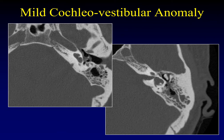Here is a mild cochlear vestibular anomaly, moving further along the spectrum to a more differentiated ear. You can see that the cochlea is actually separated from the vestibule — you can almost get a sense that it was going to start to spiral up at some point. The lateral semicircular canal is severely dysplastic but has its central bony island, and you can see the posterior semicircular canal coming off. All the elements are present, though clearly severely dysplastic.